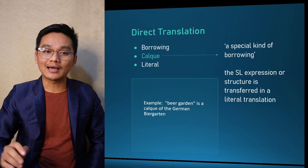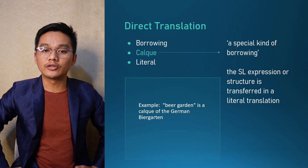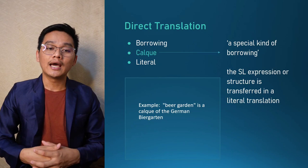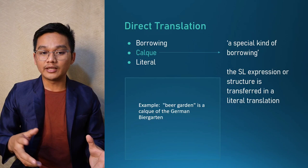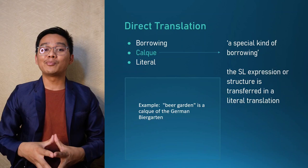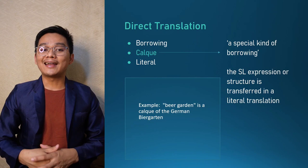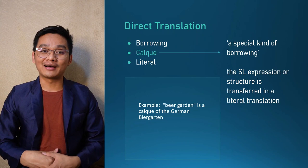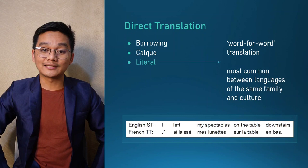Calque is a special kind of borrowing where a source language expression or structure is transferred via literal translation. For example, the German word Biergarten is borrowed into English as 'beer garden' — that is an example of a calque. Another example: in French, the word 'pomme d'Adam' becomes 'Adam's apple' in English — that is also an example of a calque.